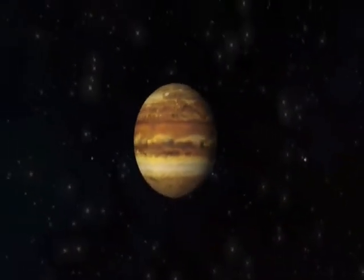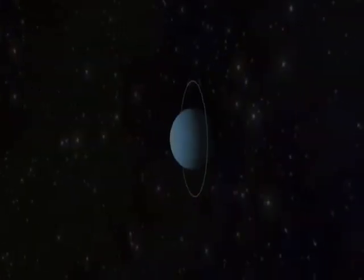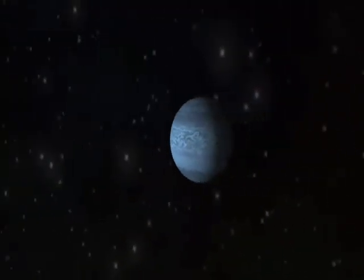Jupiter is the first and largest of the gas giants, followed by Saturn with its glorious rings. Uranus rolls on its side. Neptune is the blue world, followed last by ex-planet Pluto.